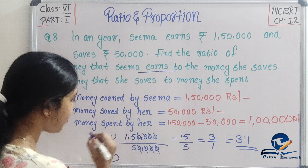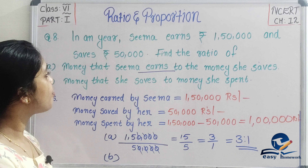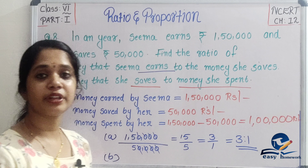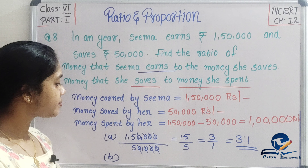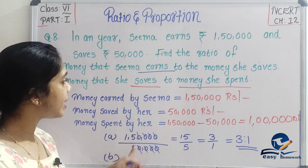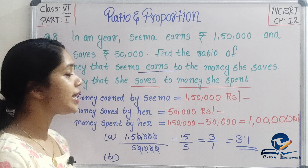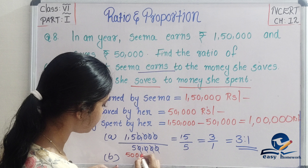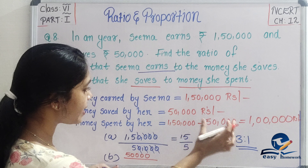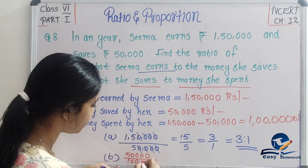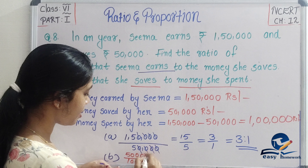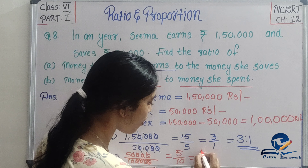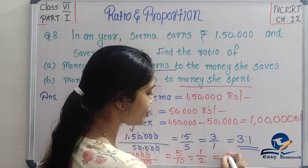The ratio is 3 is to 1. Now the b question says: find the ratio of money she saves to money she spent. Money saved by her divided by money spent by her — Rs. 50,000 divided by Rs. 1,00,000. We cancel the zeros: 5 by 10, which simplifies to 1 by 2. So the required ratio is 1 is to 2.